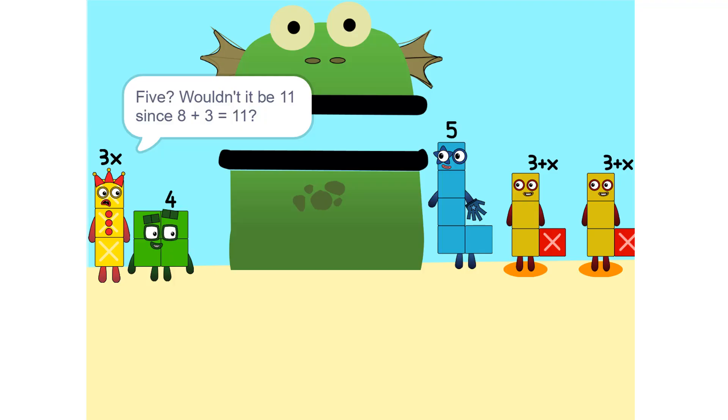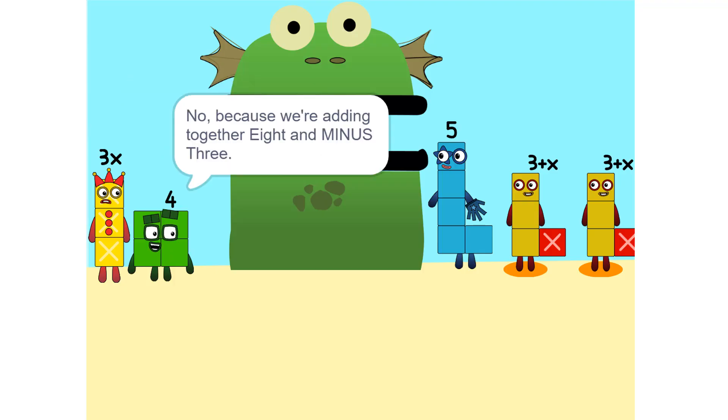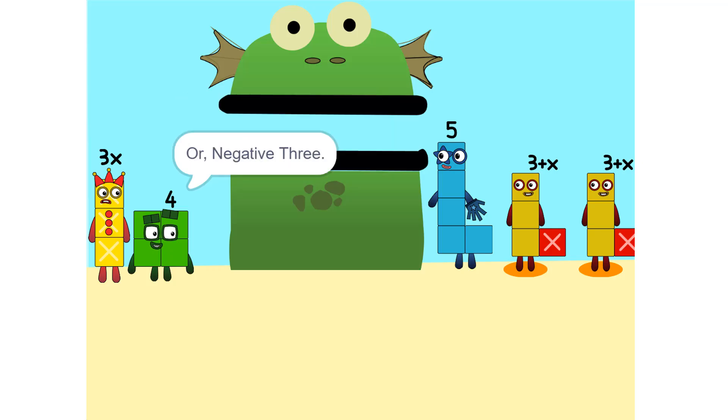Five. Wouldn't it be eleven since eight plus three is eleven? No, because we're adding together eight and minus three, or negative three. So it's five. Oh.